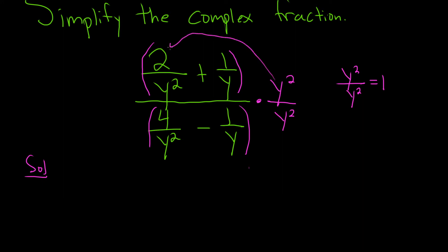Y squared times 2 over y squared. The y squared on the bottom will cancel, so we're just left with 2. And then plus y squared times 1 over y. Well, we're going to lose one of the y's because one of them will cancel, so we're left with y.